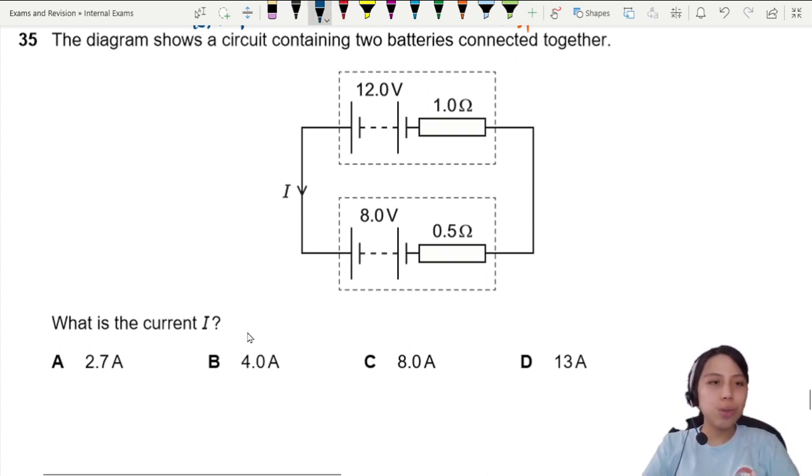The first method is to stick to your V equals IR, but since we have batteries involved here, let's say the battery total EMF equals current flowing through the entire loop times the R total.